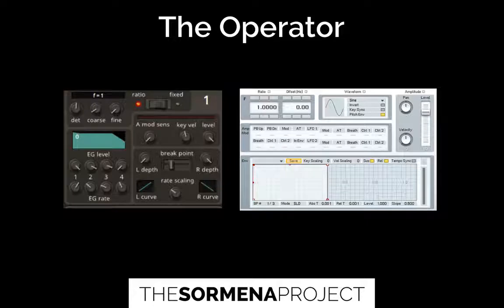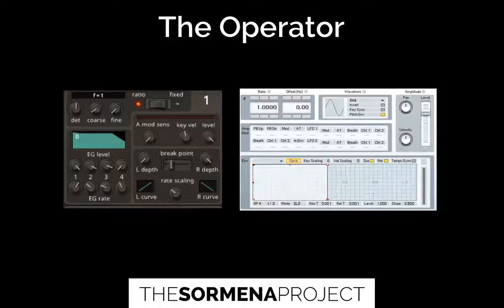Here are images of operators from Dexed and FM8. You can see both the oscillator — typically just a sine wave — and the envelope built into it. What you have the most control over is really the tuning: frequency equals one, and you can set the ratio to 2, 3, whatever, going up the harmonic series — 220, 440, 660, 880, and so forth.